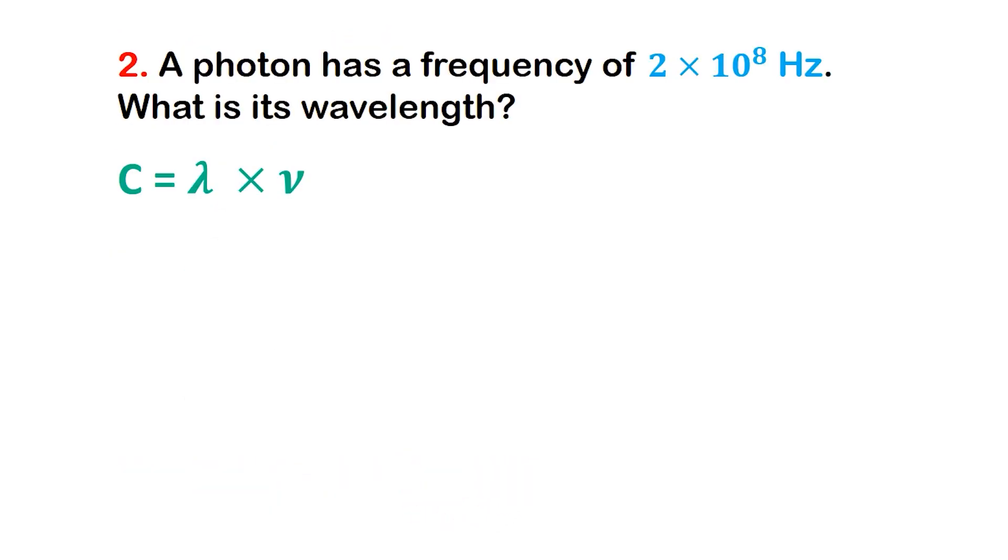Now that we've seen how to find frequency from a known wavelength, let's turn the problem around. This time, we'll start with the frequency and work out the wavelength. Problem 2. A photon has a frequency of 2 times 10 to the power of 8 hertz. What is its wavelength?